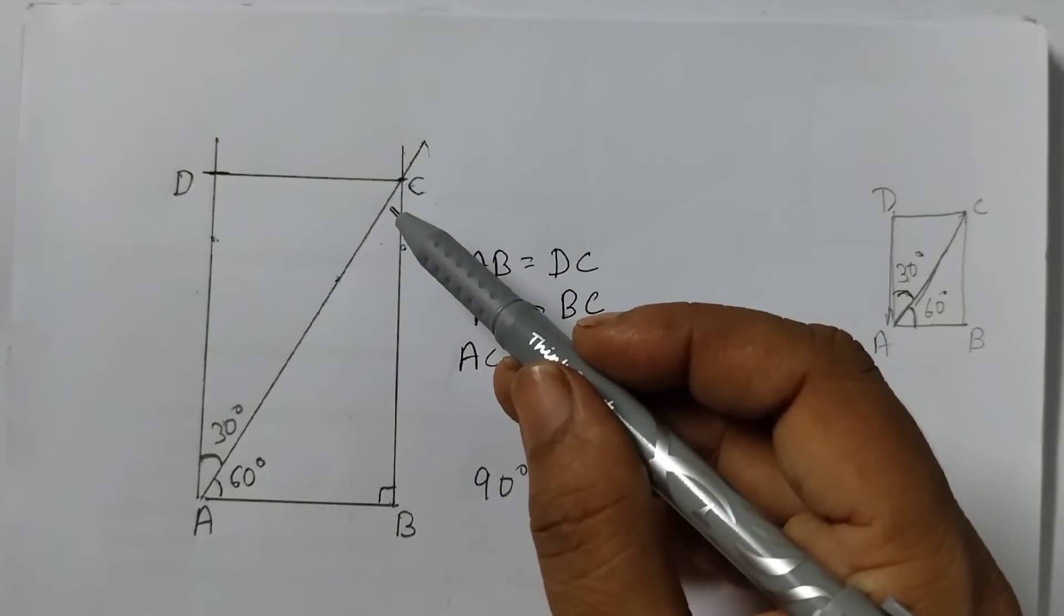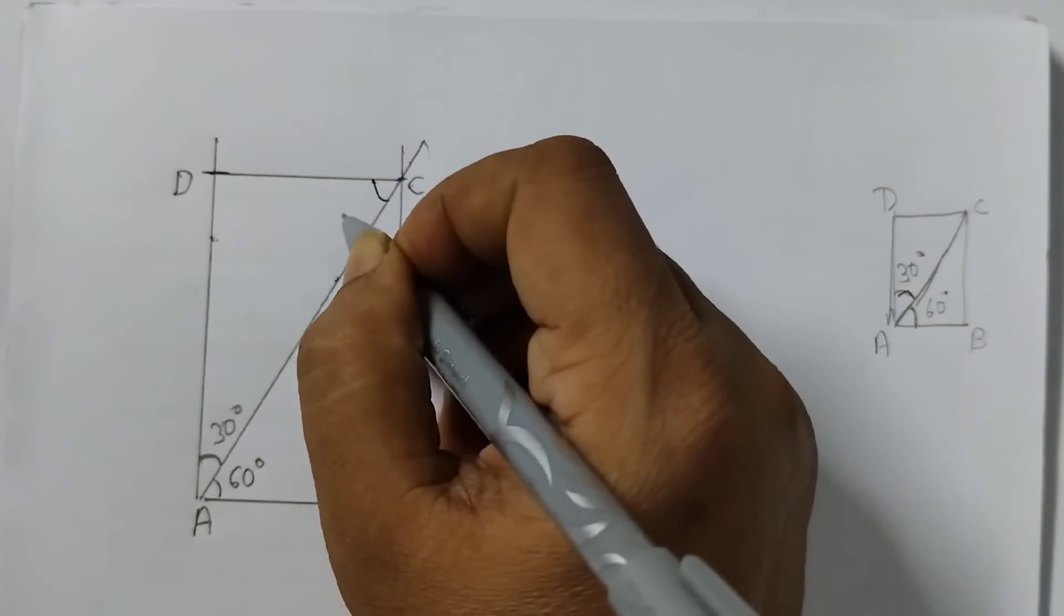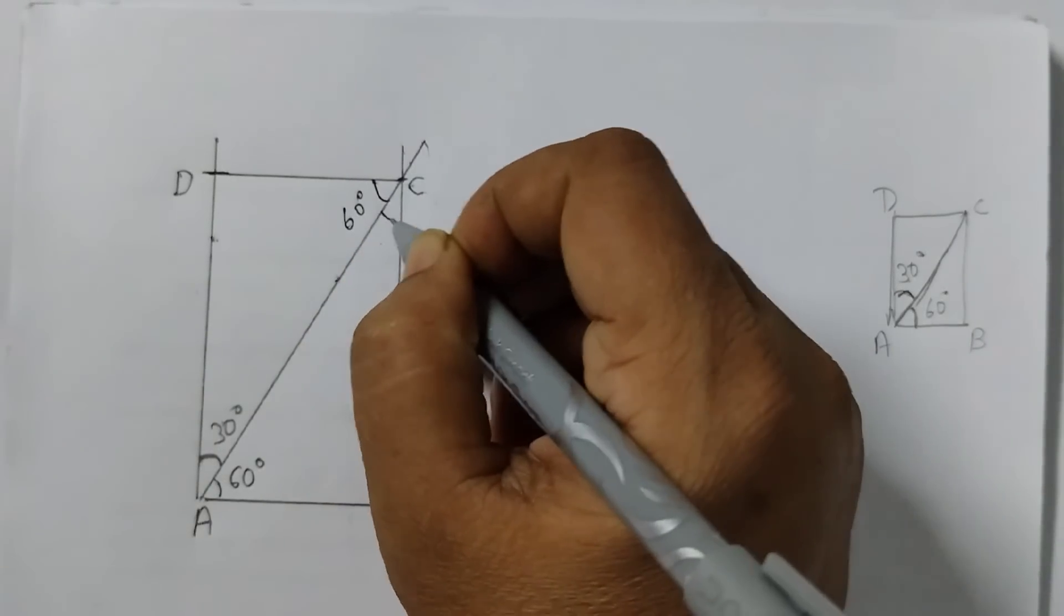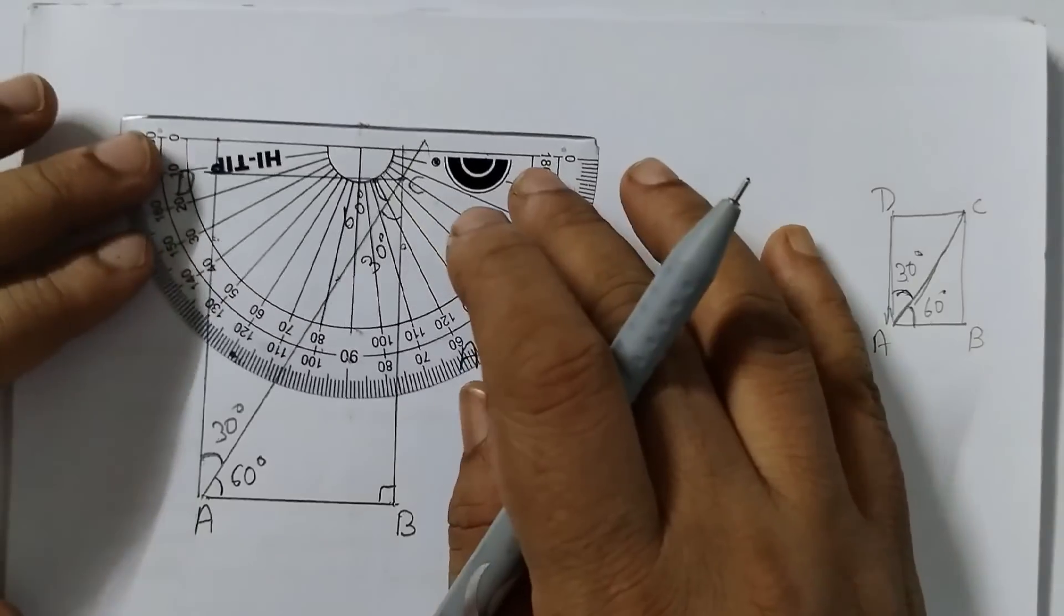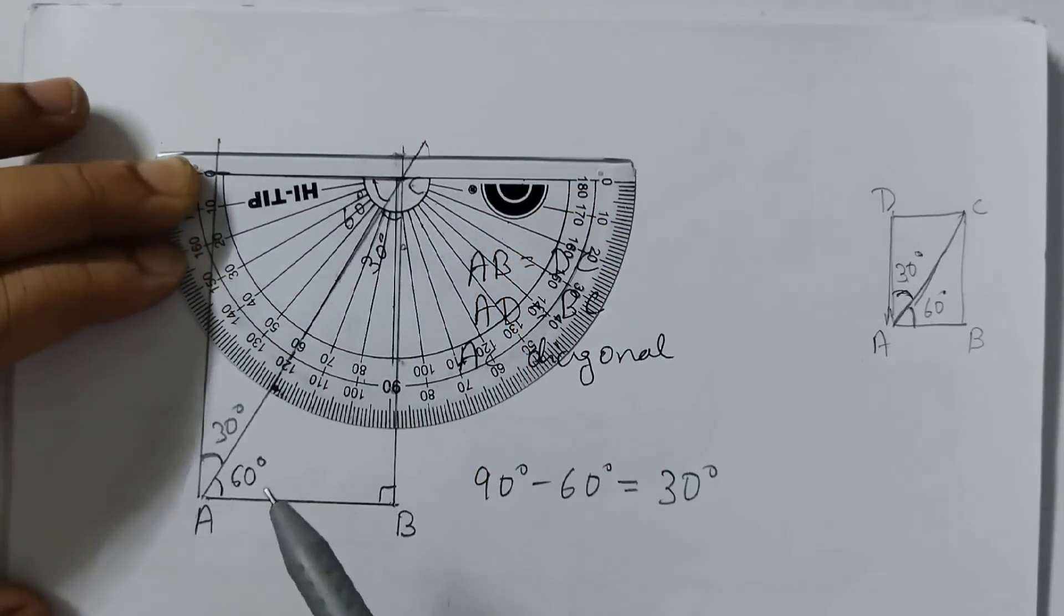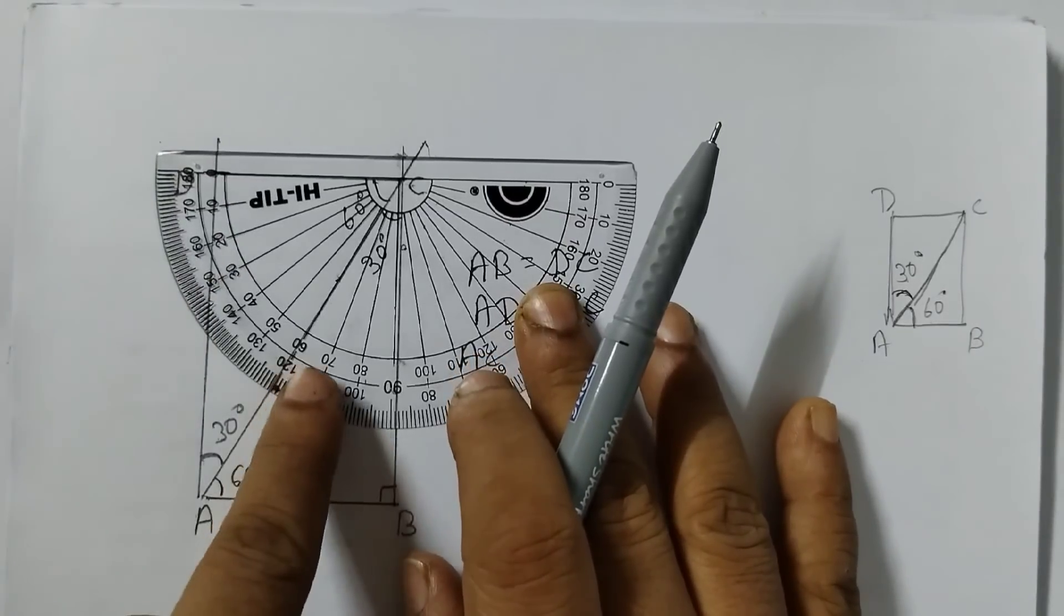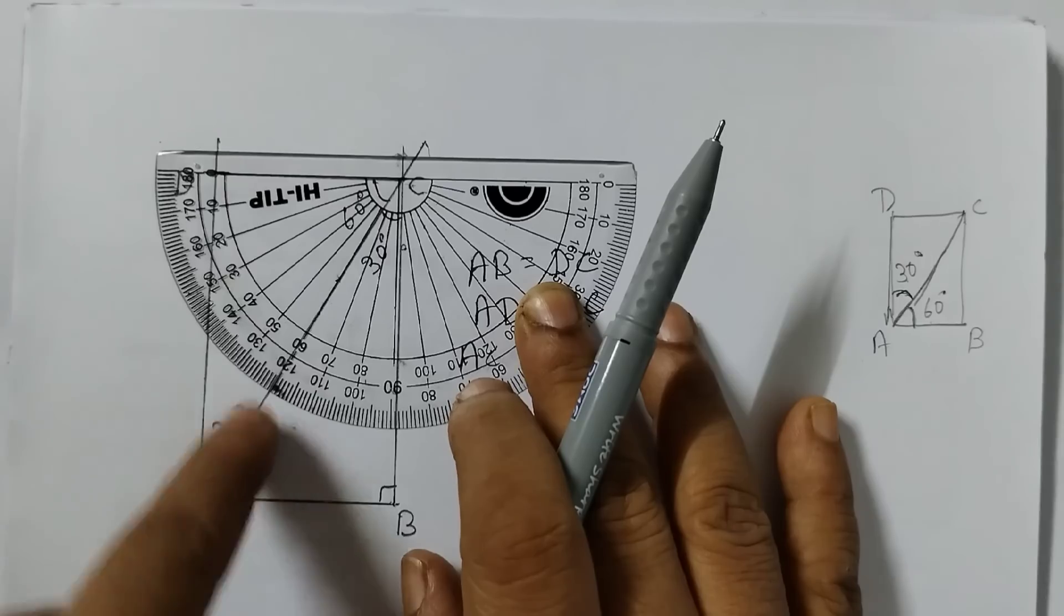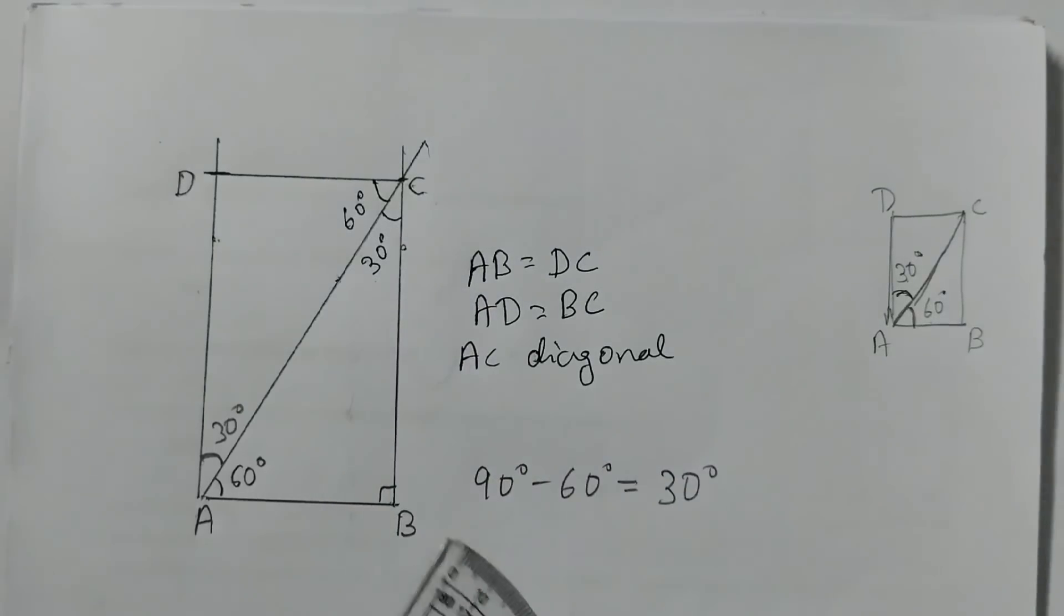Now if you measure it using protractor you will find out that this angle here is 60 degrees, and this angle here is 30 degrees. You can just measure and check. You can put the protractor like this. Now see here. You can see here. This is 60 degrees. So this is 60 degrees, and this is a 90 degree angle. Then this is 30 degrees.